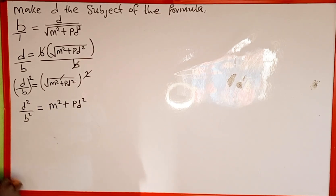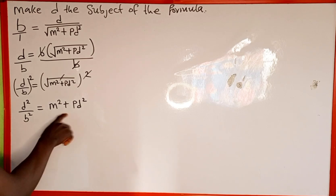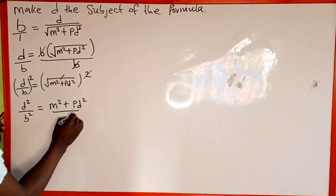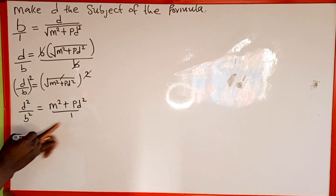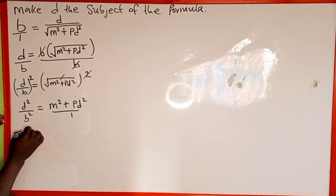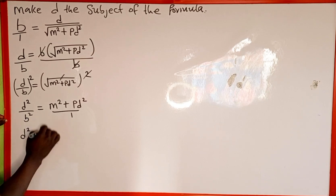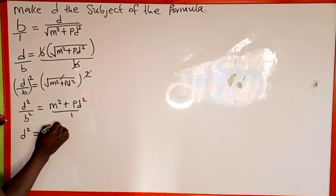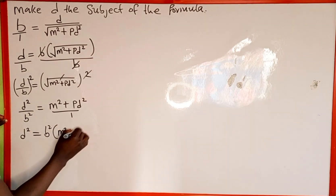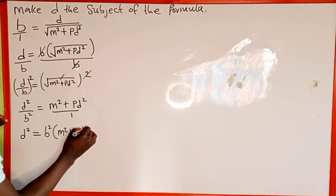The next thing we're going to do is to cross multiply again. The right hand side is the same as m squared plus pd squared over 1. Then 1 multiplied by d squared gives us d squared, which is equal to b squared multiplied by m squared plus pd squared.